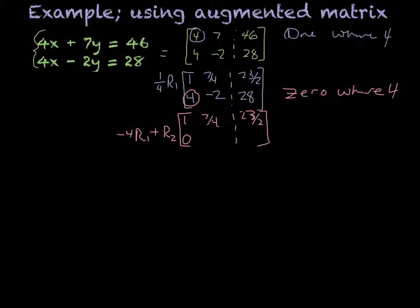Negative 4 times 7/4 is negative 7. Negative 7 plus negative 2 is negative 9. And then negative 4 times 23/2, and then add that to 28, is going to give me negative 18. Just type it in the calculator and you'll get that.